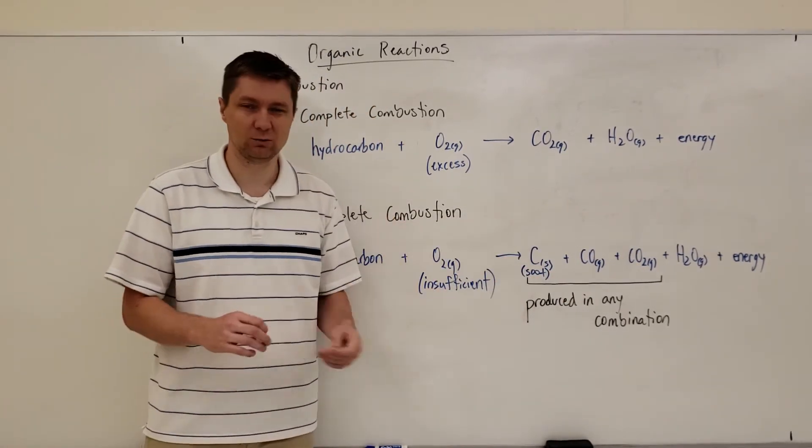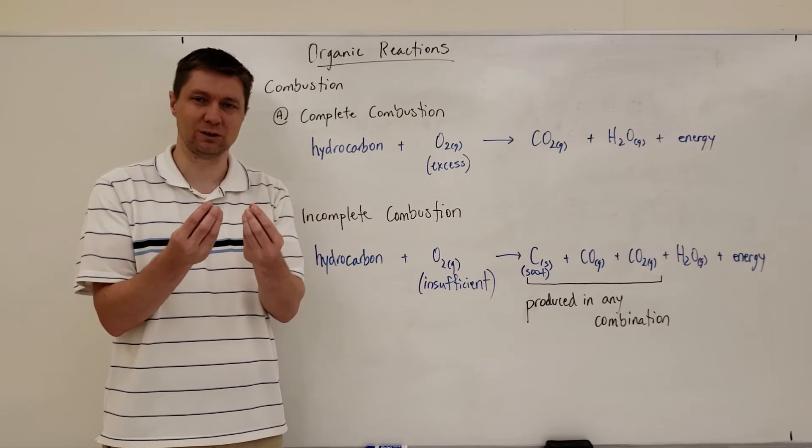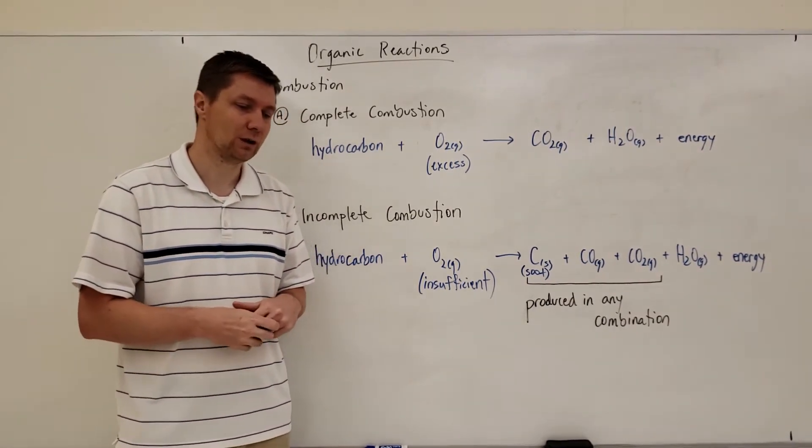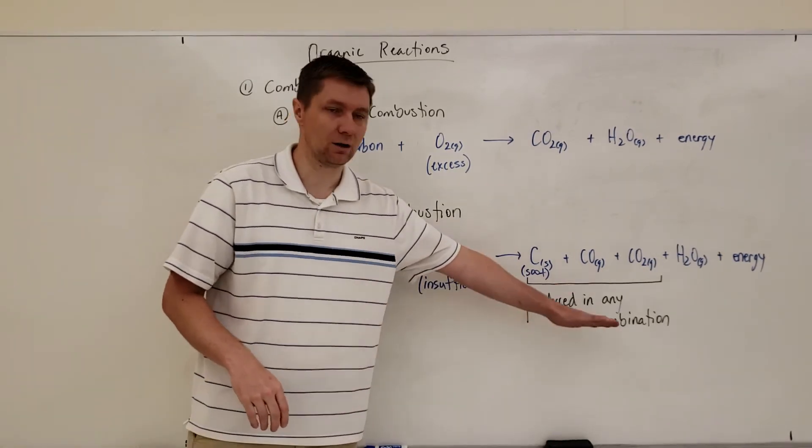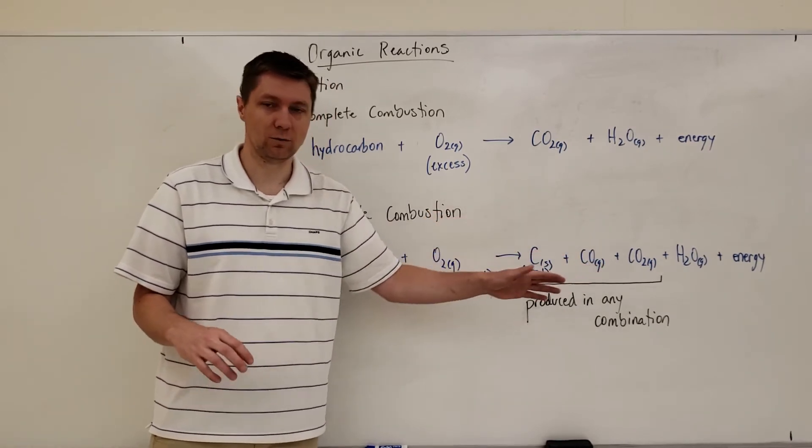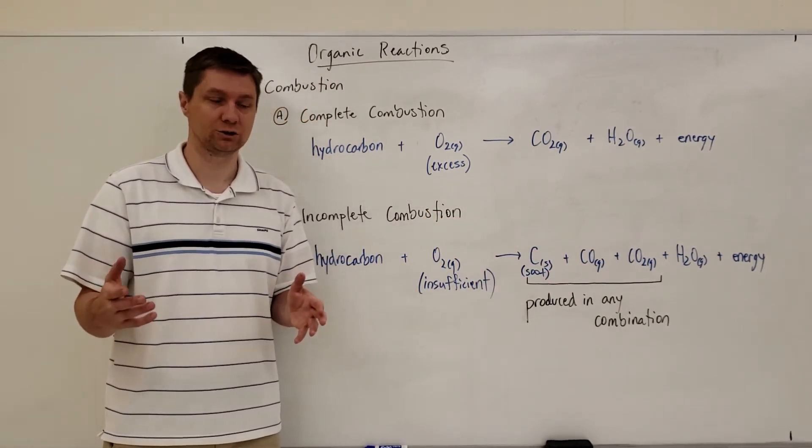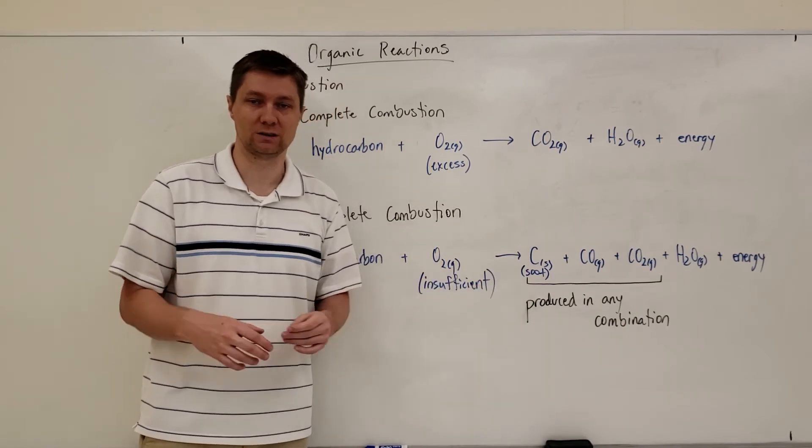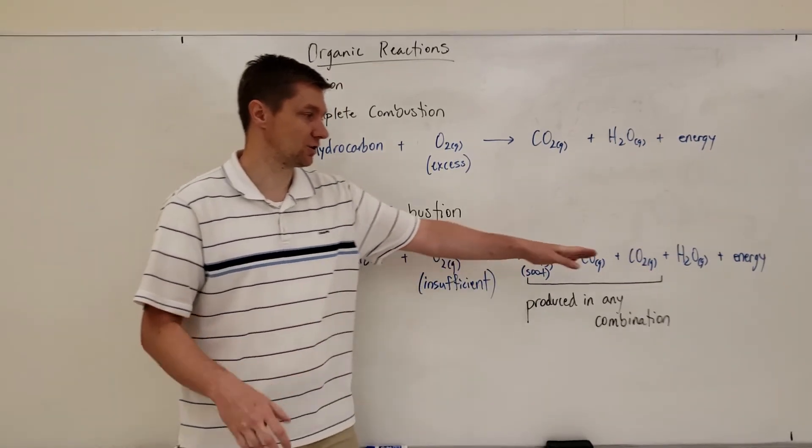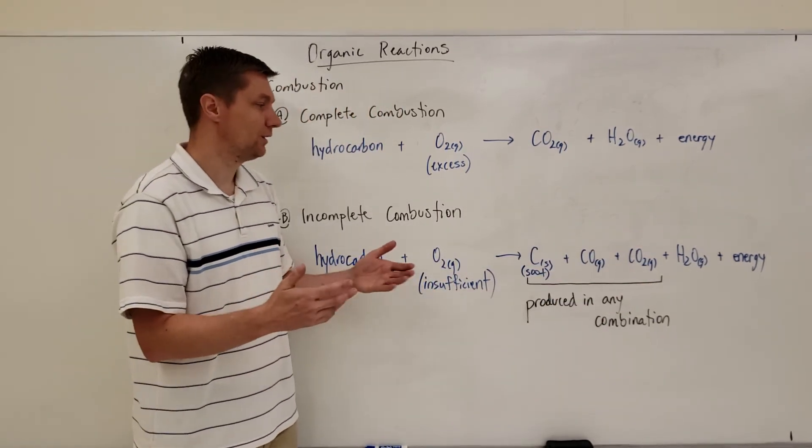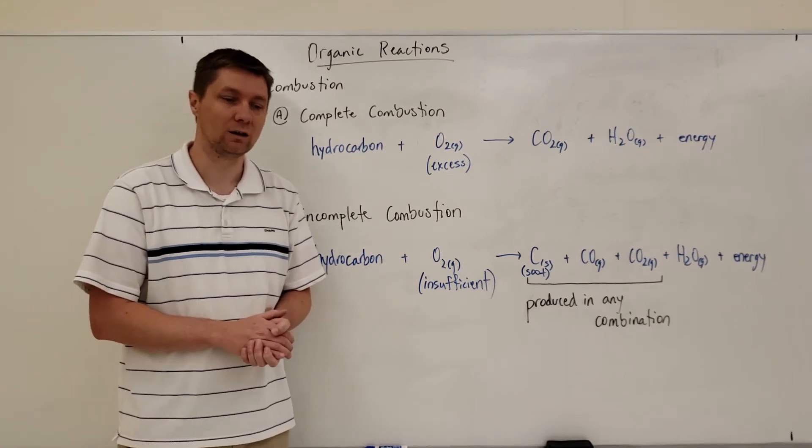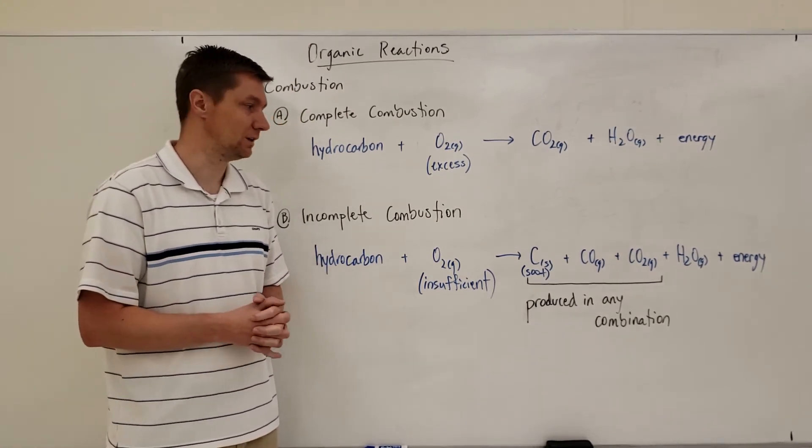So we've got carbon solid, which is just soot, it's just like that really fine black stuff. We have carbon monoxide and carbon dioxide that could be produced. And I put here produced in any combination simply because these three can all be present in an incomplete combustion, or maybe just one of those three could be present in an incomplete combustion. Now if it's just carbon dioxide, well then that would be a complete combustion. So there's got to be at least soot and carbon monoxide present there as well if carbon dioxide is one of those ones that is there.